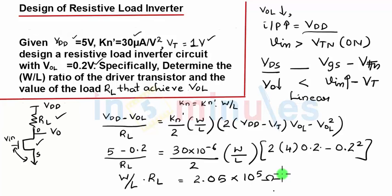Now what we can do is we can substitute different values of the load resistance RL, or we can substitute different values of W by L and correspondingly find the value of the load resistance RL. Let's put the different values of W by L ranging from 1 to 6 and see the corresponding value of RL.